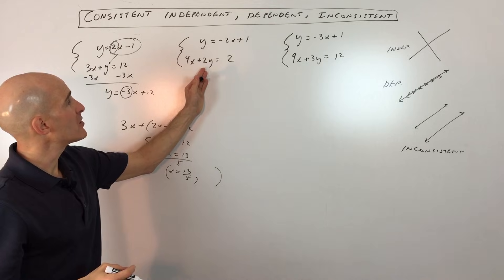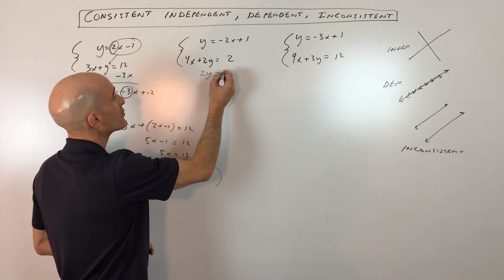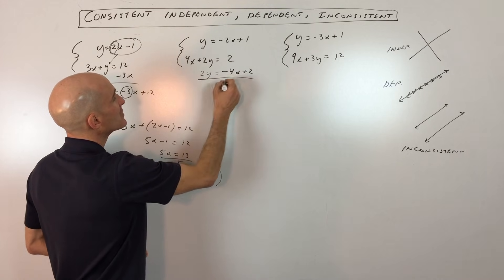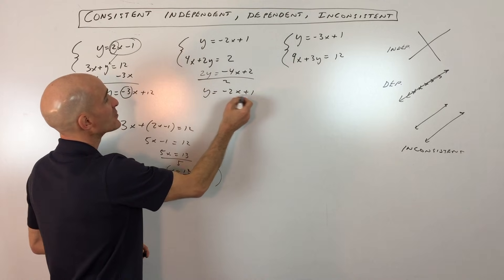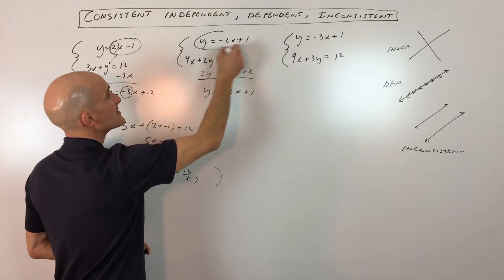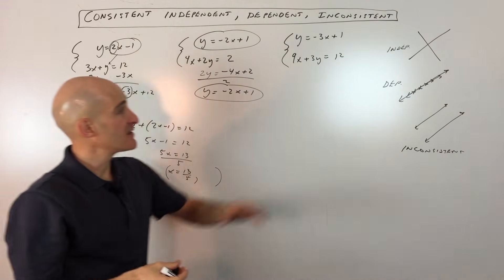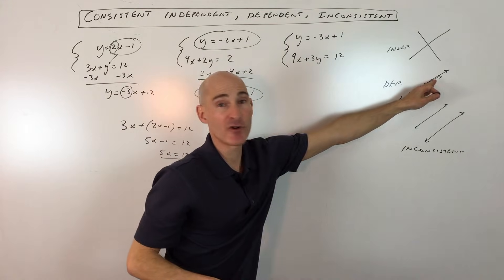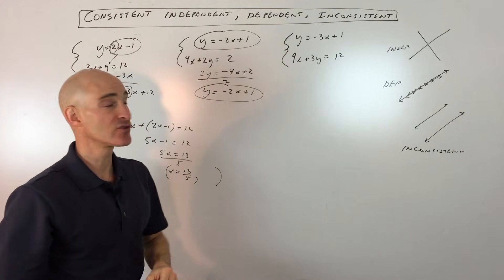If we go to this example here now, let's do the same thing. Let's go ahead and rewrite this into the slope-intercept form of the line, the y equals mx plus b form. And if we divide everything by 2, we get the y by itself. We see that we get y equals negative 2x plus 1. And you can see that's the exact same equation that we have here. So what that tells us is that it's this scenario here where the two lines are actually right on top of one another and they're crossing at an infinite number of points. So that's called consistent dependent and there's an infinite number of solutions.